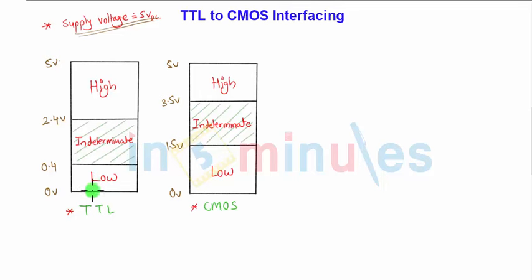If TTL output is low (0 to 0.4 volts), it will be well fitted in the window of CMOS logic low (0 to 1.5 volts). No need to add changes because logic low is the same for both. For the worst case condition, logic low is 0.4 volts in TTL, which also fits well in the CMOS family.